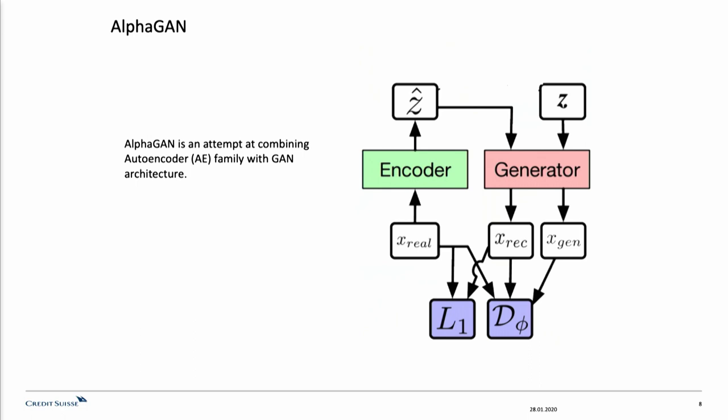Also, the generator will take some random noise and will try to create some normal data out of it. The discriminator takes the real and the fake samples and attempts to distinguish between them.